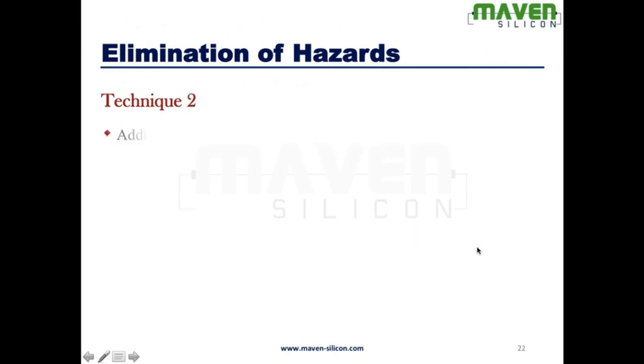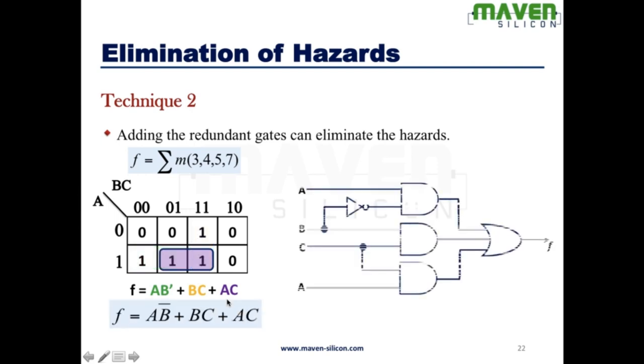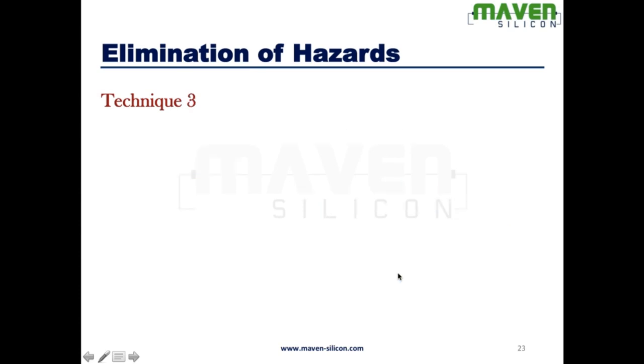And another way, while minimizing the terms, you have the logic function. You group 1s like this. And you can also create the redundant term grouping 1s like this. Look at here. The AC is the redundant term. This way you can avoid the glitch. So, here this is the gate for AC.